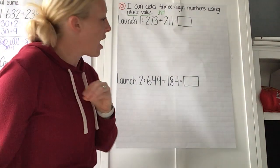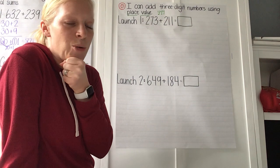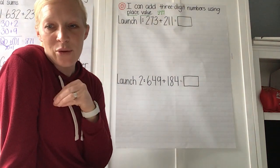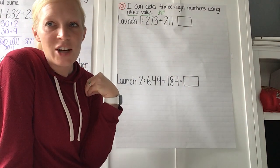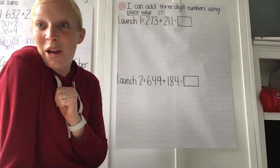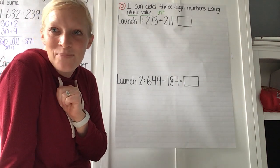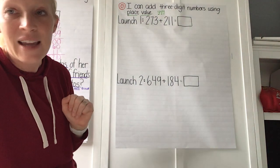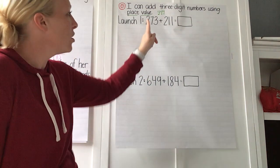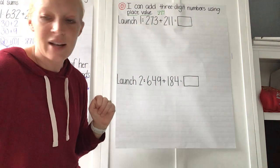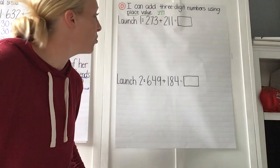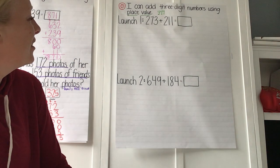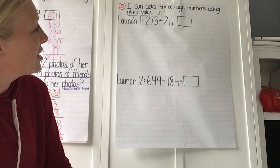So today I want you to solve this first one in whatever way works best for you, and I'm gonna be asking some friends to share their strategies. We're gonna put them up here and do a little comparing and contrasting to see how they're the same and how they're different. Our first problem today is 273 plus 211. How would you show your thinking? What model did you use? How did you show 273?